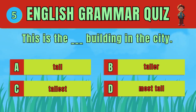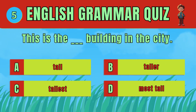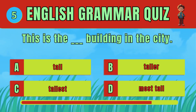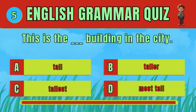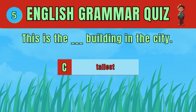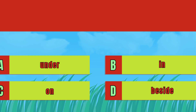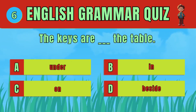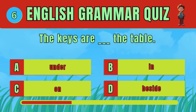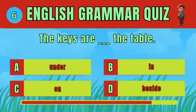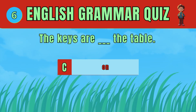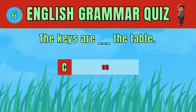Select the correct superlative adjective. Choose the correct preposition to describe where the keys are. The answer is: on. The keys are on the table.